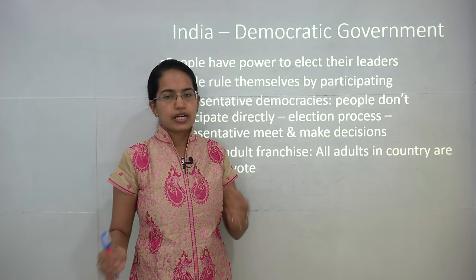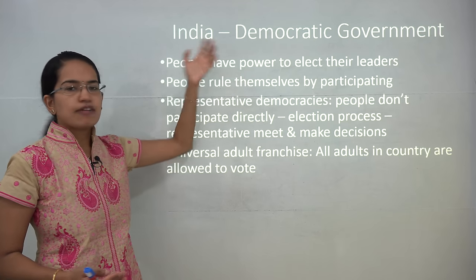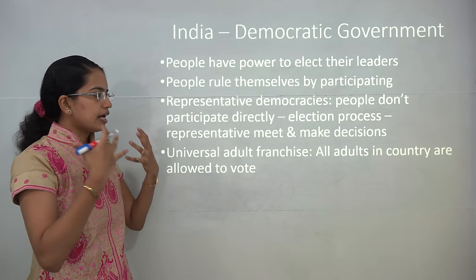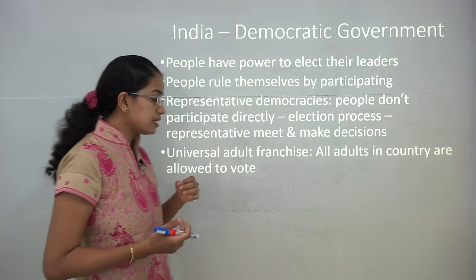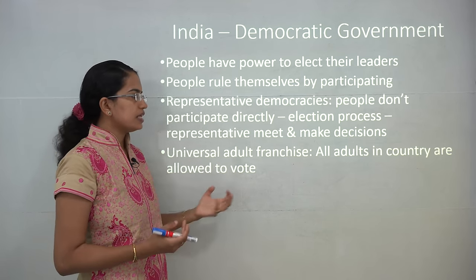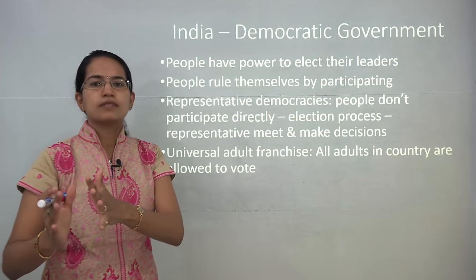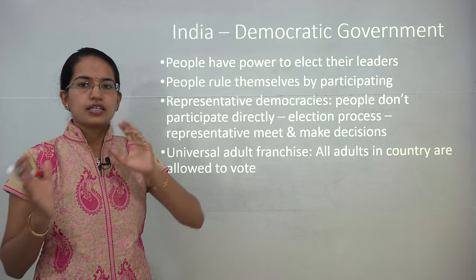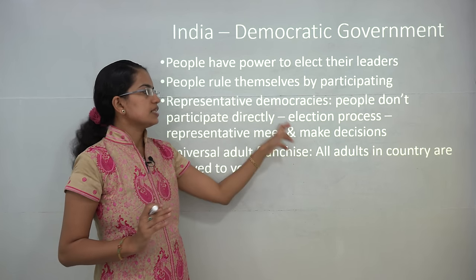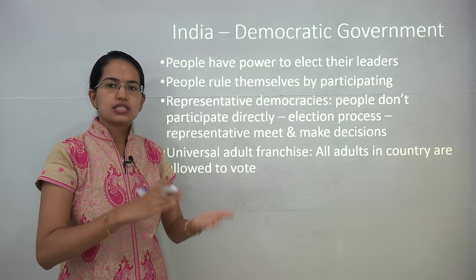The next is India and the democratic government. India is predominantly a democratic government — government of the people, for the people, by the people. People have the power to elect the leaders, and leaders are answerable to the people who elected them. People rule themselves by participating, feeling they are part of the democratic setup. Ours is a representative democracy. A representative democracy means people do not participate directly in the government process; instead, they vote for a person who would represent them as part of the government. People elect that person through the process of election, and the representatives take decisions that are then passed on to the people.